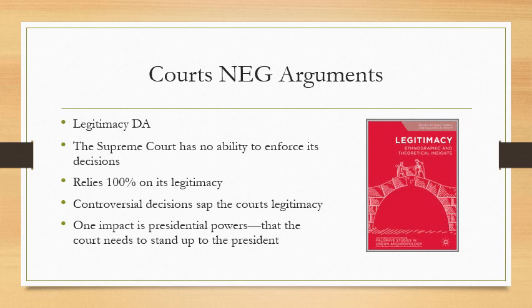A really good example of this is Brown v. Board of Education. The Supreme Court struck down segregation in schools, but a lot of governors and states didn't listen and didn't integrate their schools. It was so bad that Dwight Eisenhower, who was the president of the United States, had to send the National Guard down to the South to make sure that the ability of black children to attend school was enforced.